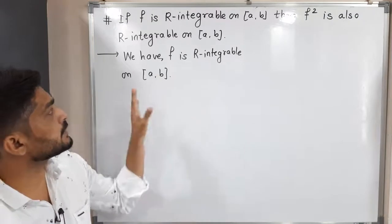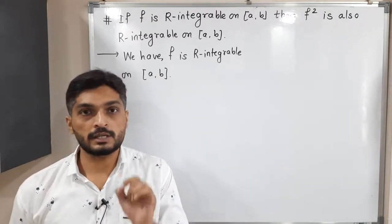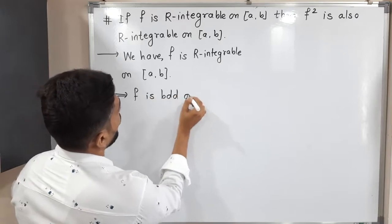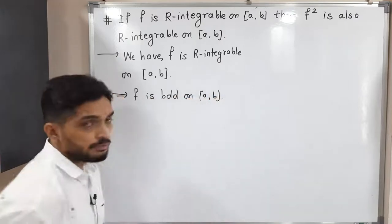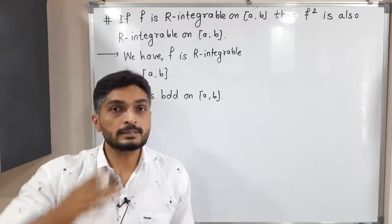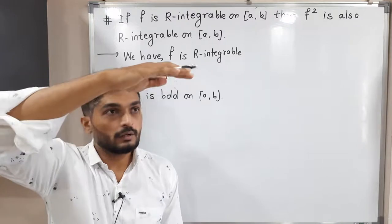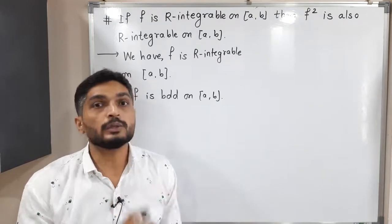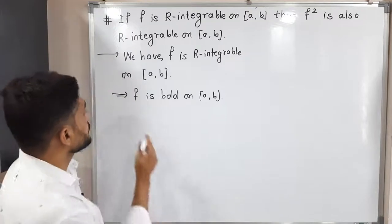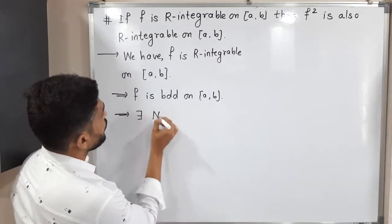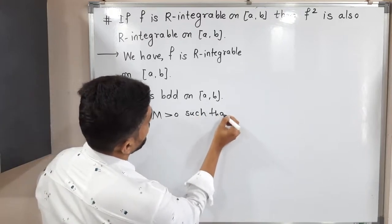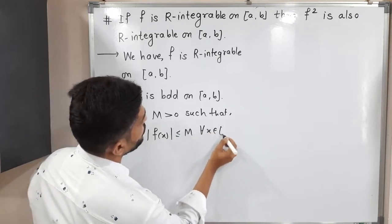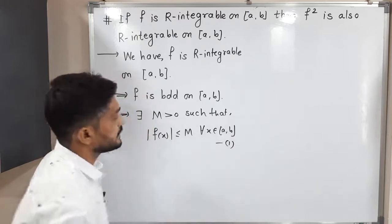Since f is Riemann integrable on closed interval [a,b], then f is necessarily bounded on [a,b]. That means it is bounded below and bounded above. Therefore, there exists a positive real number M such that |f(x)| ≤ M for all x in [a,b]. I am calling this statement (1) — this is a very important result.